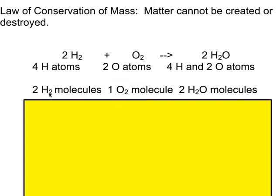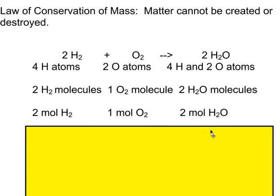We could also look at this in terms of molecules: two hydrogen molecules plus one oxygen molecule makes two water molecules. Here you might think that mass isn't conserved, because you started with three molecules on the left and only made two on the right. But molecules is not what's conserved — it's the mass, meaning the number of atoms, which we already demonstrated is conserved.